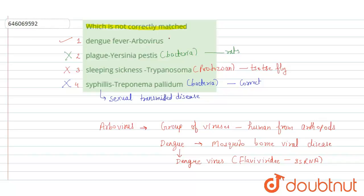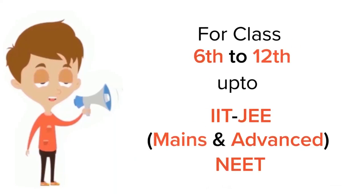This is the incorrect match, or we can say it is not correctly matched. So our correct answer is option number one: dengue fever and arbovirus.